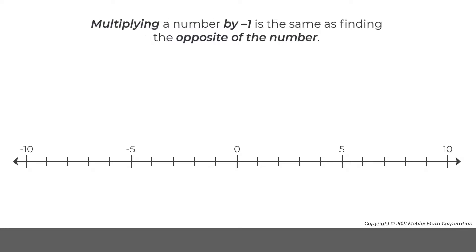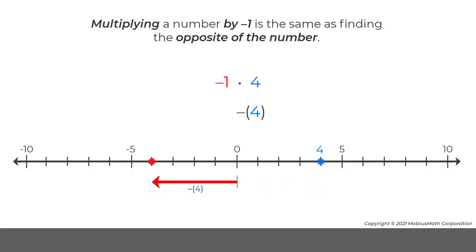Multiplying a number by negative 1 is the same as finding the opposite of the number. For example, multiplying negative 1 times 4 is the same as finding the opposite of 4. So, negative 1 times 4 equals negative 4.